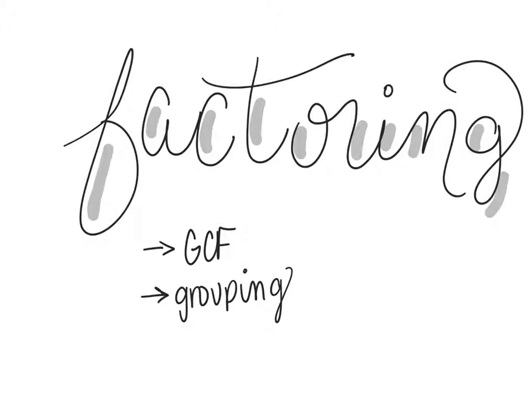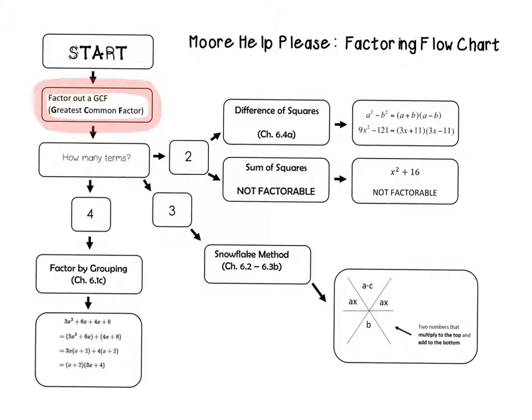So these are two cases. With the factoring out a GCF, you will notice that is always the first thing you try. So here's the flow chart that you were given in class. Factoring out a GCF means before you do anything else, check to see is there something that all of the terms have in common.